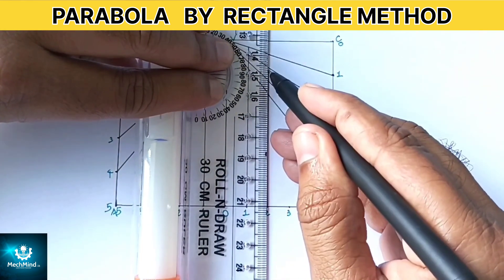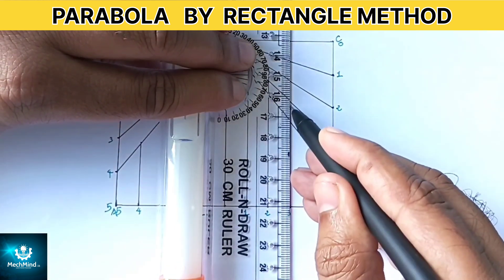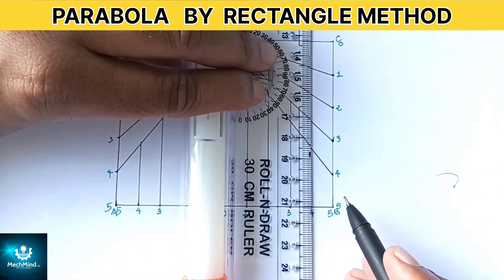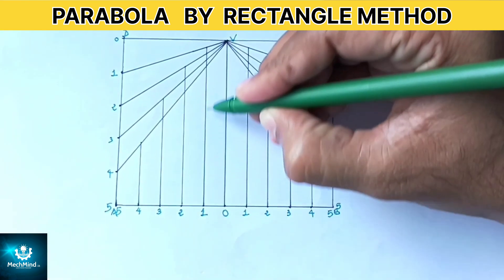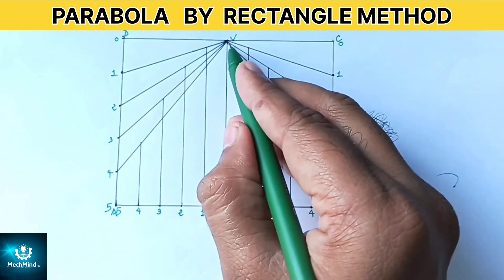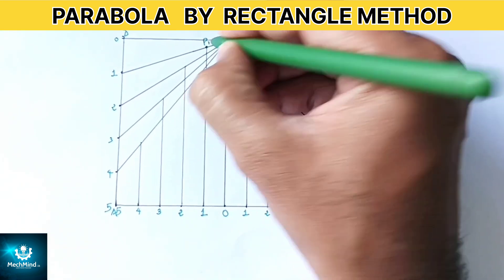Similarly find the intersection points on the right hand side of the axis. Now observe this vertical line intersect the slanting line drawn from the vertex. Mark these intersection points as P1, P2, P3 and P4.